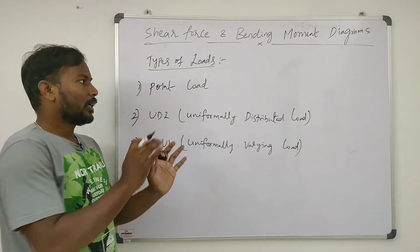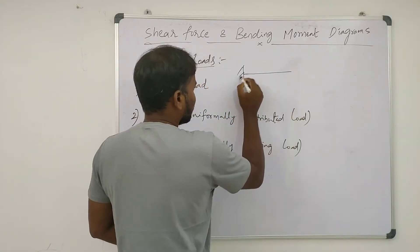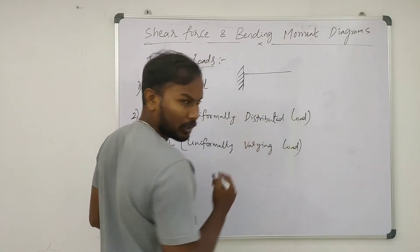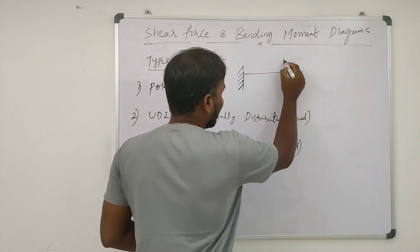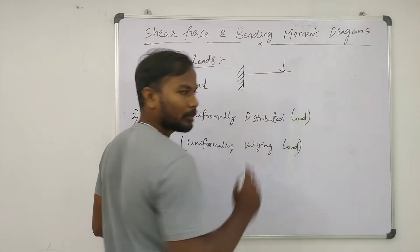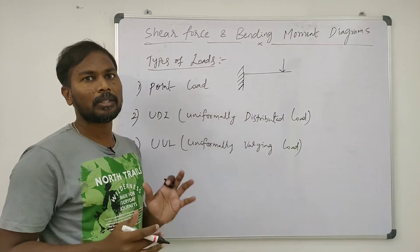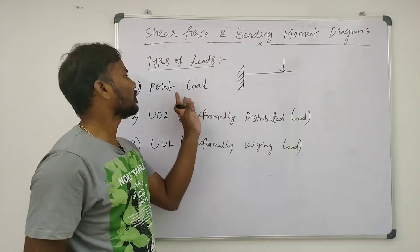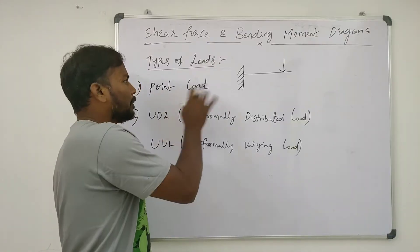Point load — the load acts at one single point on the beam, whether it is a cantilever, simply supported, or overhanging beam. That will be called as point load.